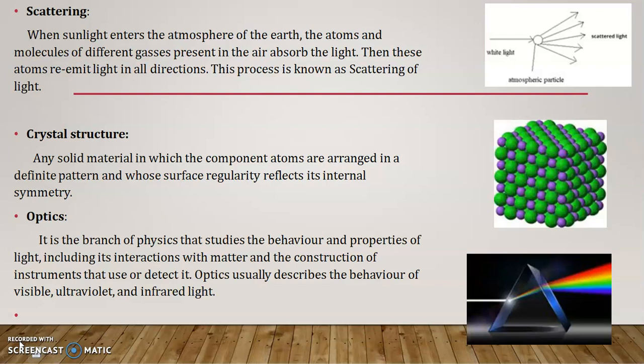The next word is optics. It is the branch of physics that studies the behavior and properties of light. It also includes the interaction with matter and the construction of instruments that use or detect it. It usually describes the behavior of visible, ultraviolet, and infrared light. Visible light is 300 to 700 nanometers. Below 300 is ultraviolet; above 700 is infrared light. That is all the behavior we learn from optics.